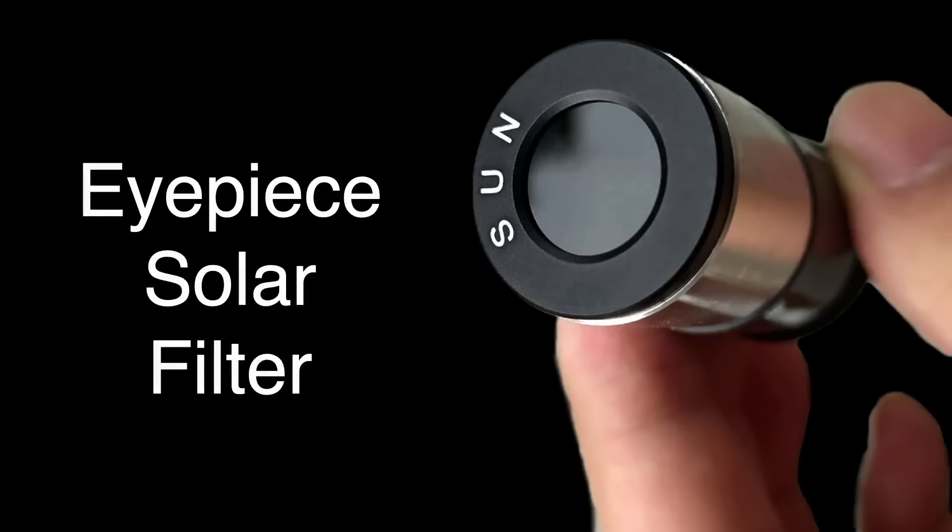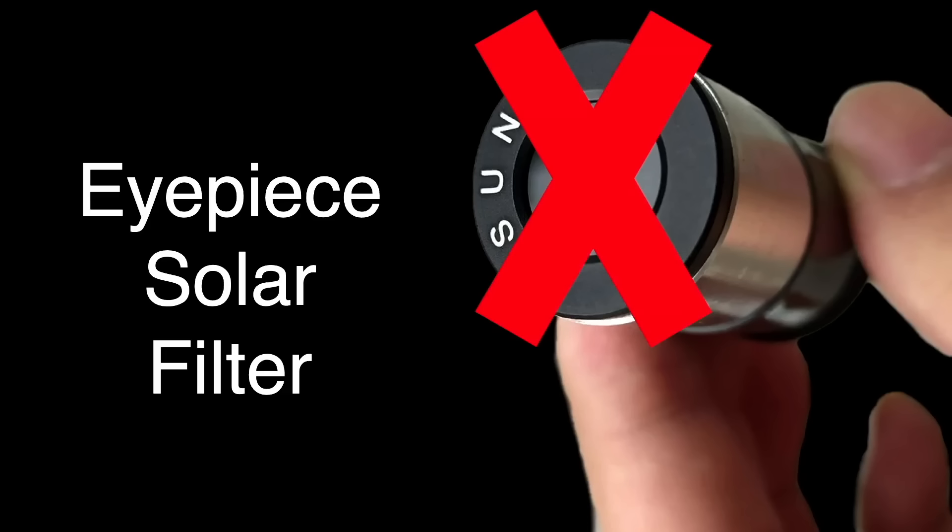Some older telescopes you may find in your attic came with a solar filter you screwed into the eyepiece. You can even find these for sale today from unscrupulous vendors. These are extremely dangerous. The big lens at the front of the telescope concentrates the sunlight and passes it through the much smaller filter where most of the energy is absorbed. The absorbed light can heat the filter to very high temperatures and it may shatter while you're observing, causing instant and permanent damage to your eye. Throw this filter away and use the projection method instead.